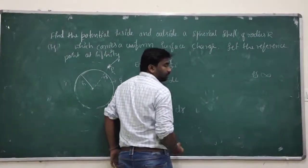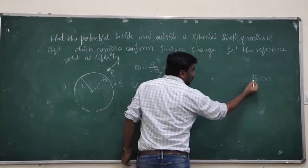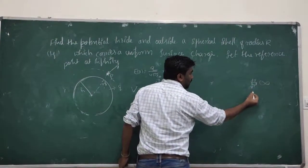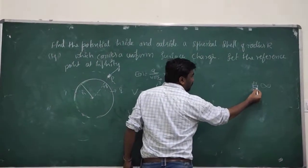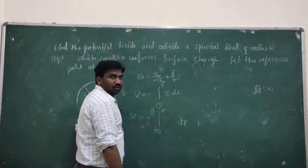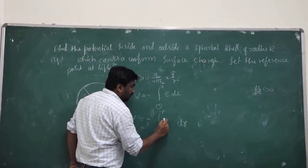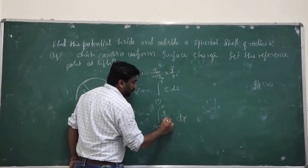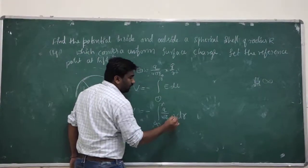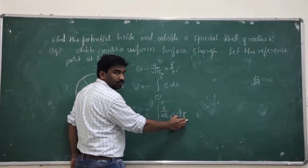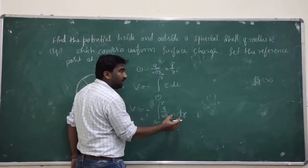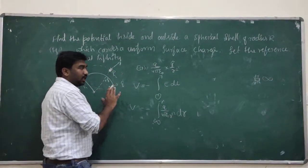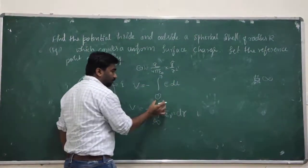Here the position vector is r-dash and the magnitude of the vector is r-dash squared. So V_E is equal to q divided by 4 pi epsilon r into r-dash squared dr. I am bringing the total charge of the spherical shell from infinity to a given point r.